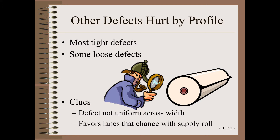The first clue is if the defect does not span the width uniformly — it is either somewhat or extremely profile dependent. The same is true if the defect is in lanes that come and go with changes in supply roll.